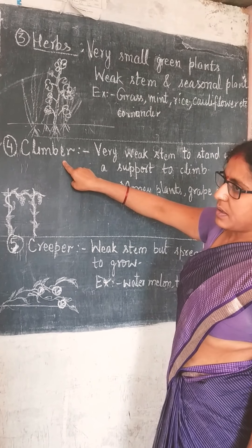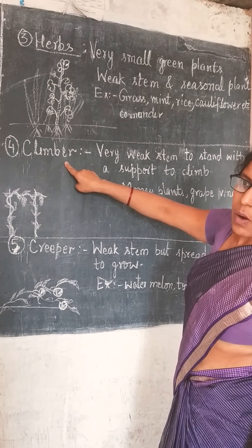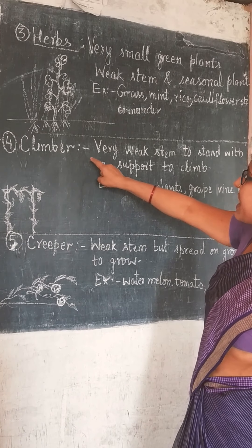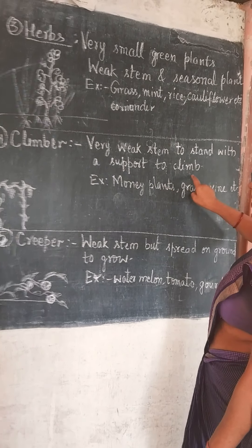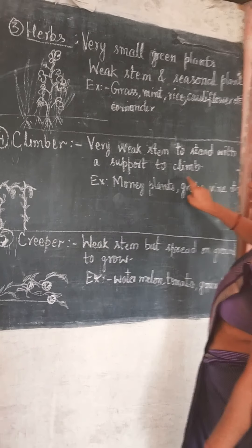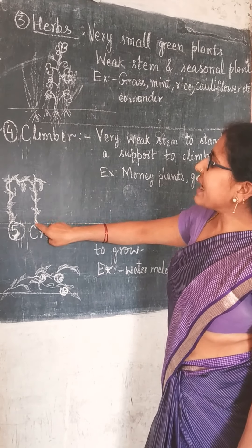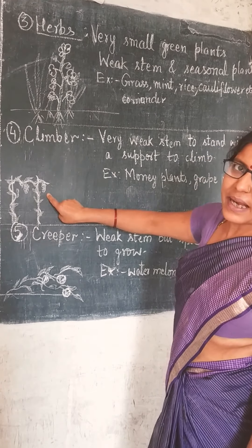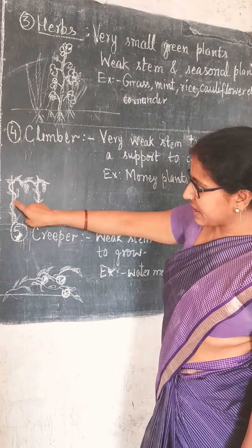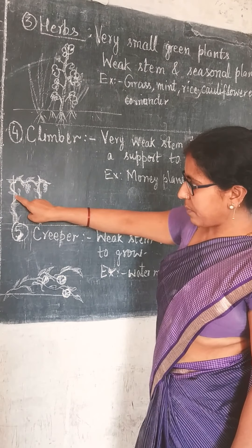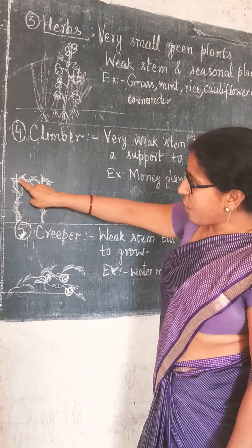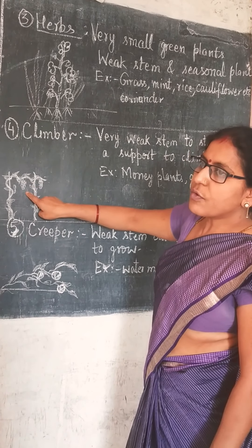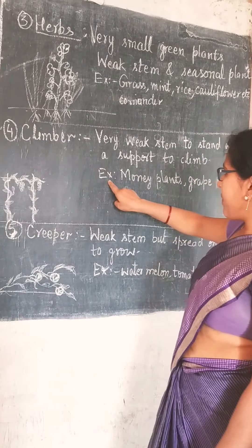The fourth type is Climber. Climber means a plant that climbs. These plants have very weak stems and cannot stand on their own - they need support to climb. They take support of walls, fences, or other plants to grow upward and bear fruits. For example - money plant, grapevine, etc.